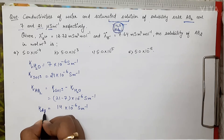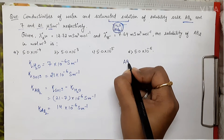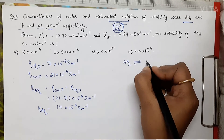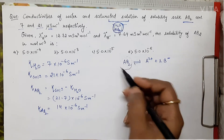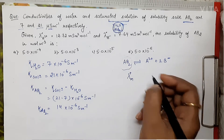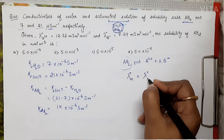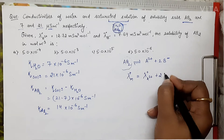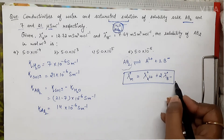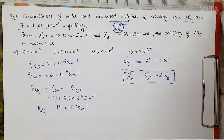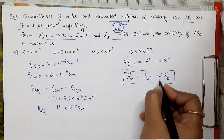Now, looking at the salt AB₂, it dissociates as: AB₂ → A²⁺ + 2B⁻. To find lambda_0m — the molar conductivity at infinite dilution — we write the expression using the ionic contributions. The two required ionic values are given, and we substitute them into the formula.